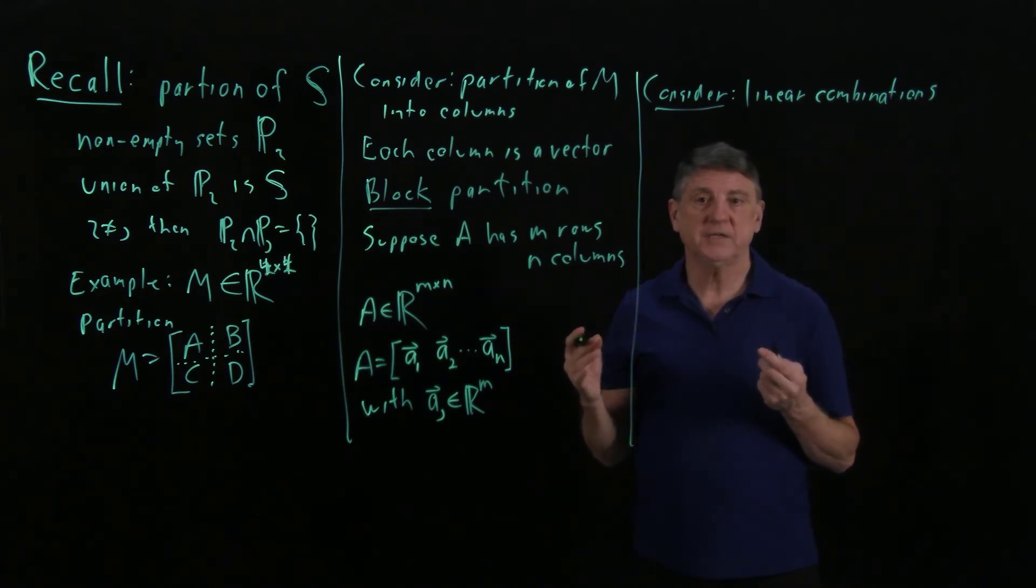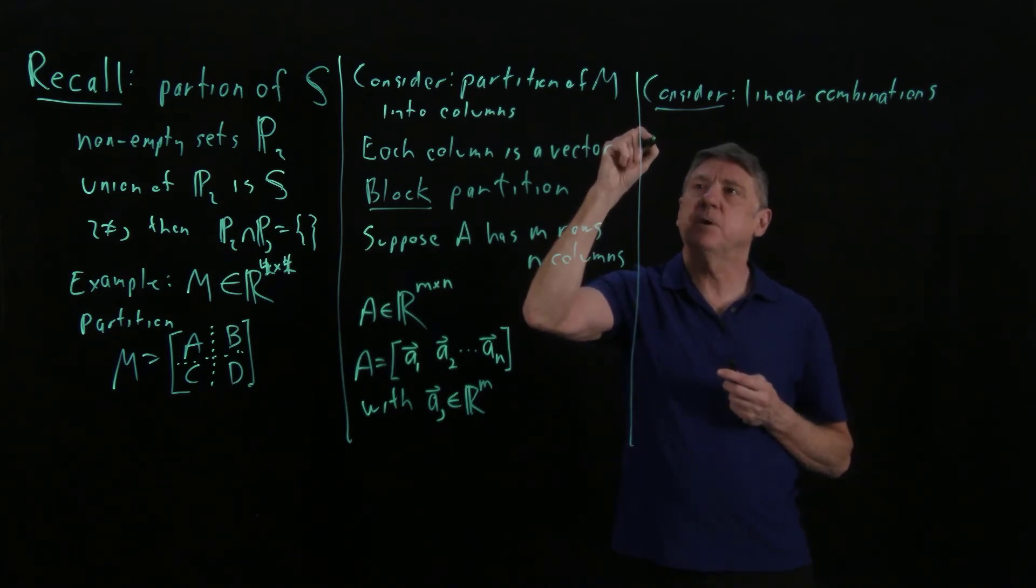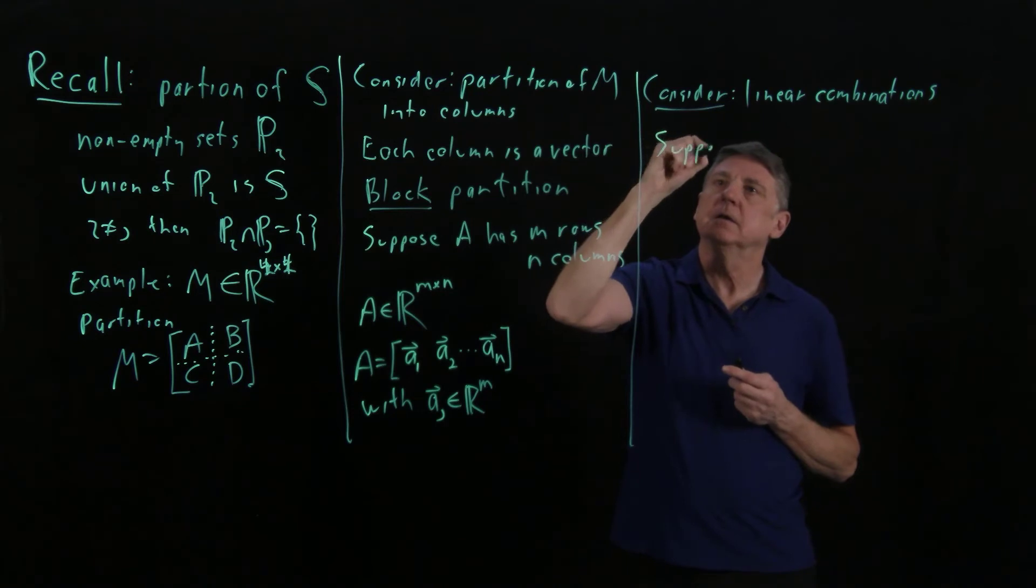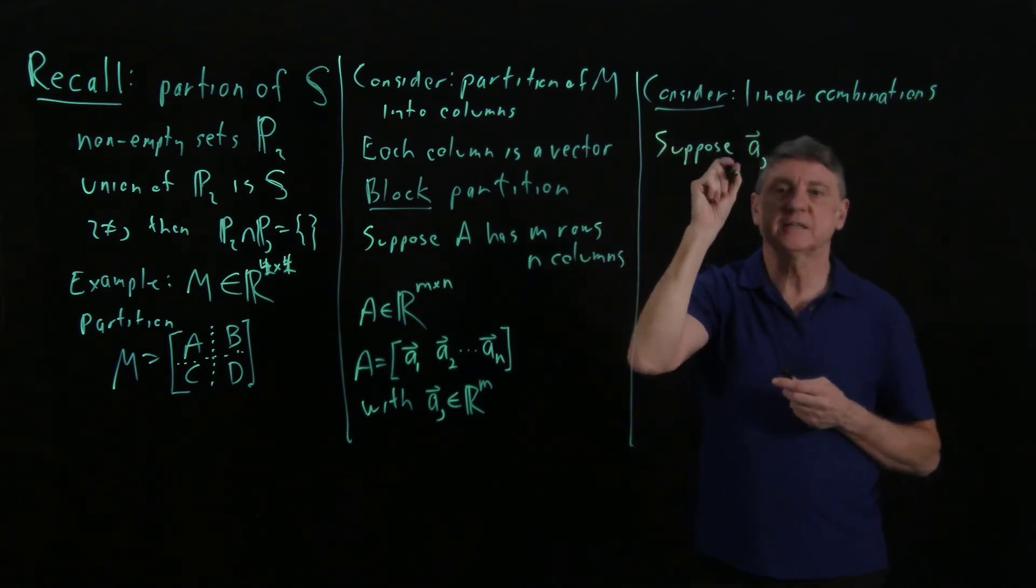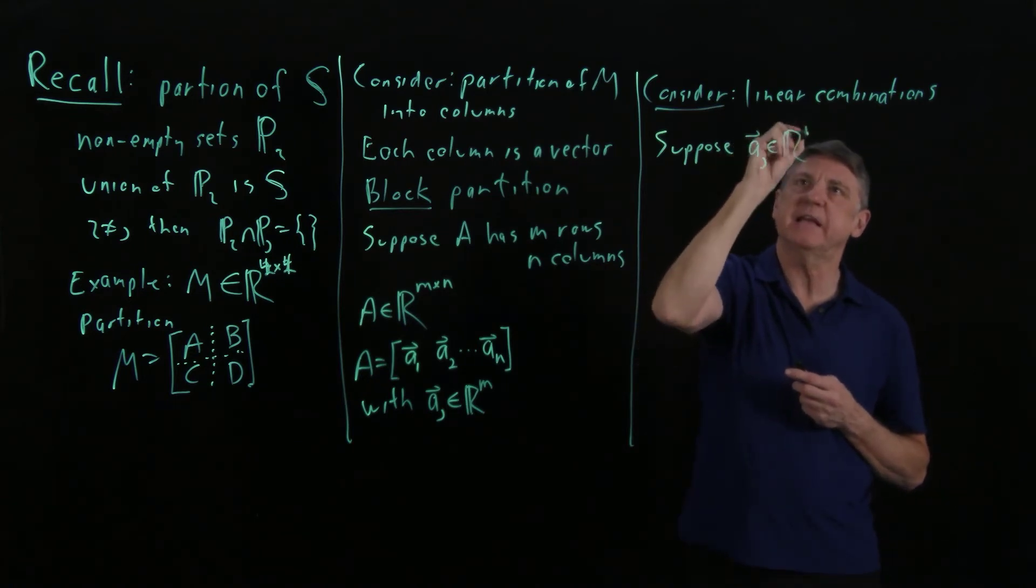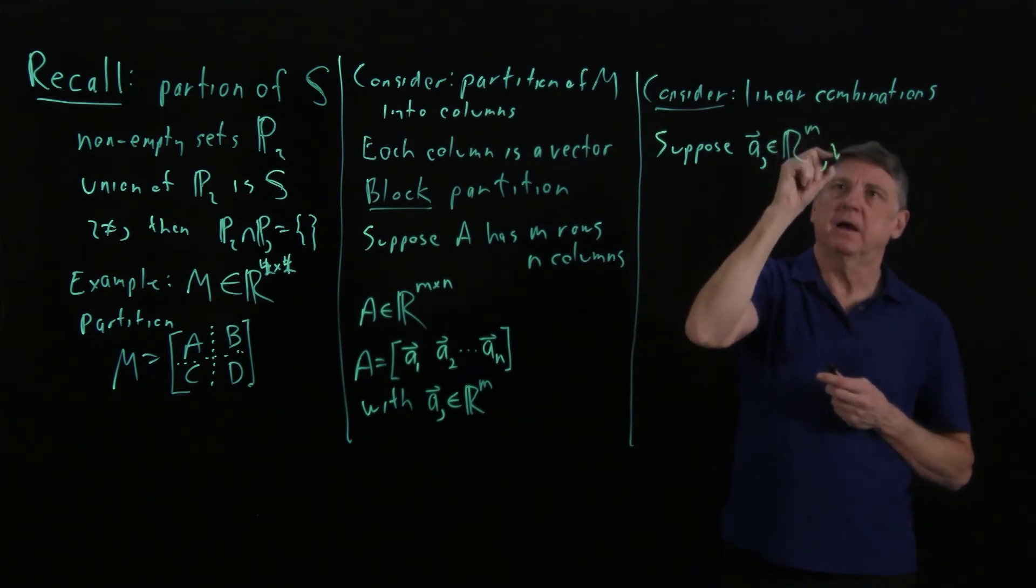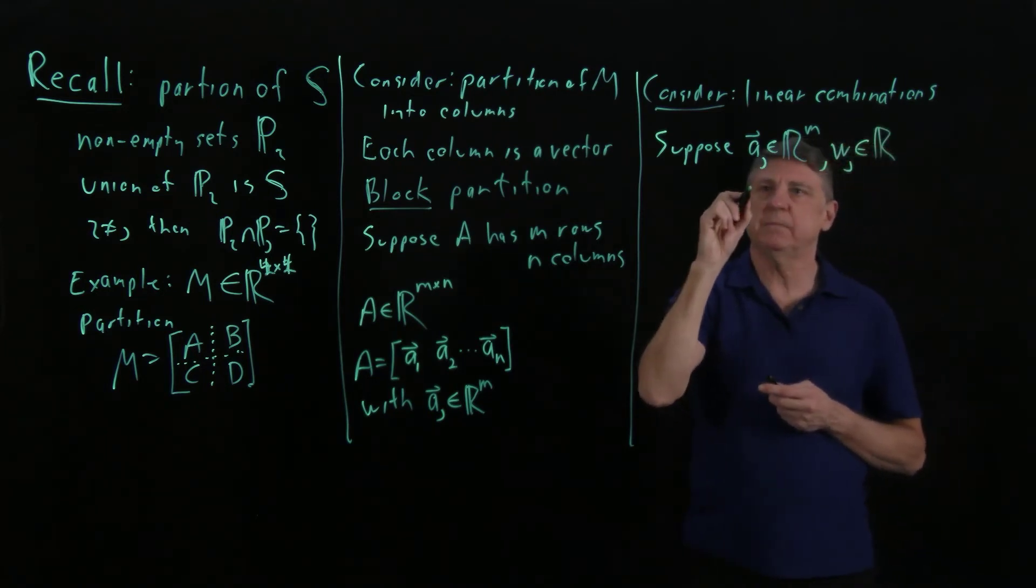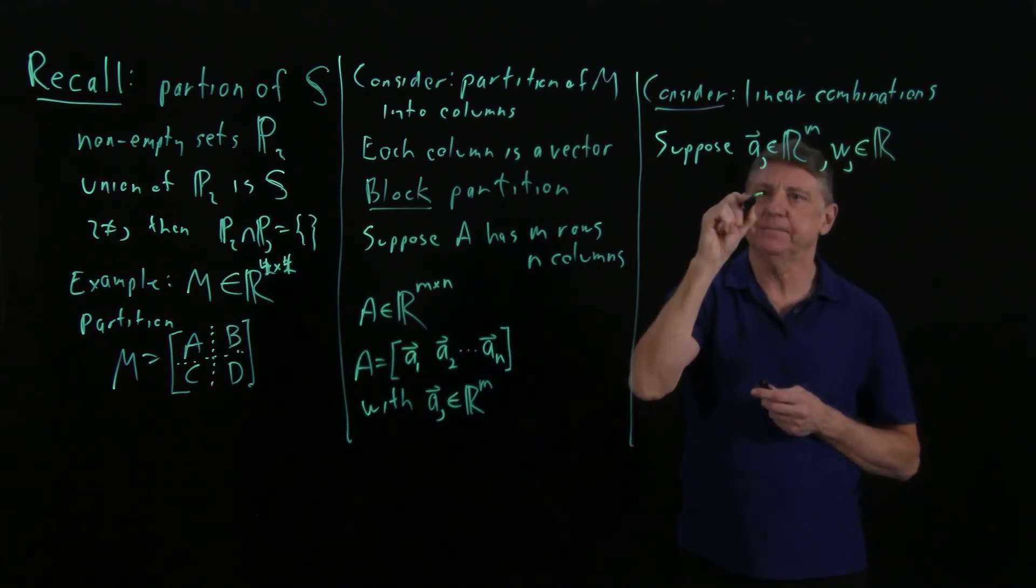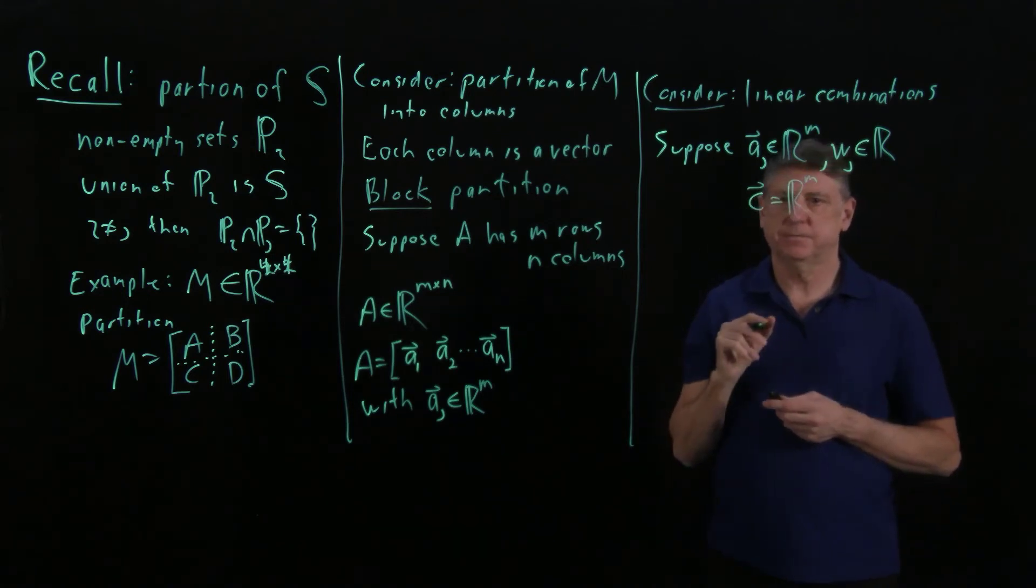Well, what is their linear combination? So what we could do is, let's suppose we have a group of vectors, and I'll index them with j, and each one of these has M entries. And suppose that I have a scalar, a real number wj. And then suppose I have a vector c that also has M entries.